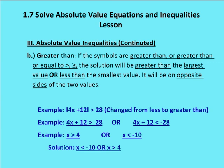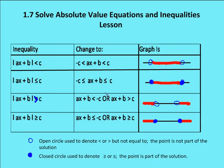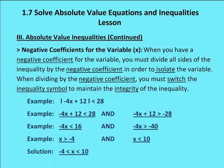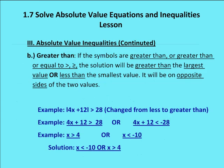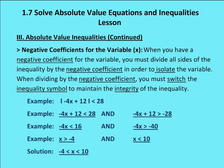So consulting the table again — the greater than symbol means the solution is outside of the two values. My final solution is: x is less than negative 10, or x is greater than 4. The solution set uses 'or' and is on the outside of the two boundary points.